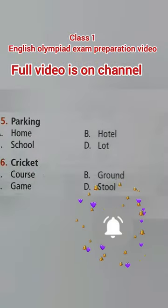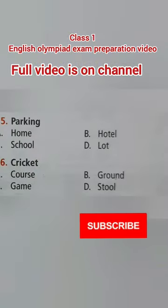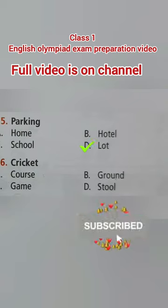Now let's do the other questions. Fifth: parking. Option A: home, Option B: hotel, Option C: school, Option D: lot. The right option is Option D — lot. Parking lot.